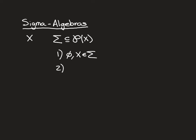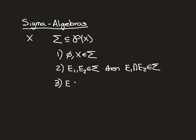Property two: for an algebra, it was closed under finite intersections. So if E1 and E2 are elements of sigma, then E1 intersect E2 is an element of sigma. And property three: if E is an element of sigma, then E complement is also an element of sigma. So the algebra is closed under complement and closed under finite intersection. If our class of subsets of X obeys these properties, then it is called an algebra.